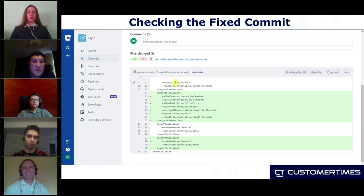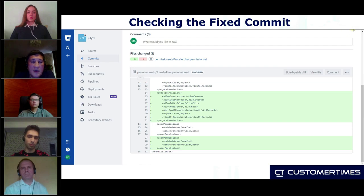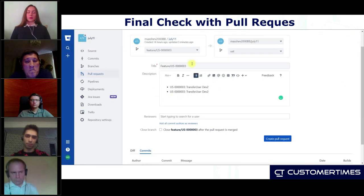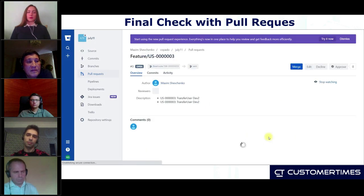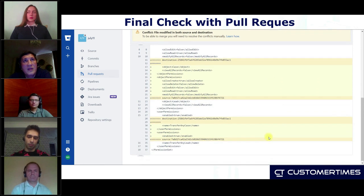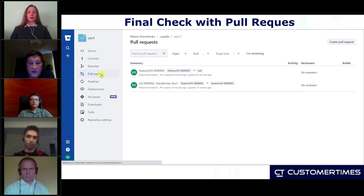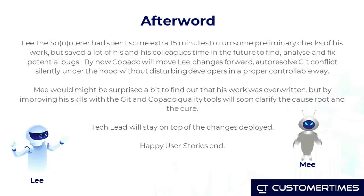What we are doing right now is fixing the problem. In the same user story, we are going to commit the same metadata to override our previous commit. We can see in our user story that we now have two commits, and the second one is with the correct functionality. Our feature branch is updated. If we check our commit, everything is in place — we can see Transfer Any Case and Transfer Any Lead. In green, we can see what was updated in our feature branch. After committing his fixes, we do our pull request. There will still be a conflict, but our commit is now enriched with the correct functionality, and this conflict is going to be resolved by Copado itself.